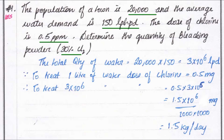For the solution, first we have to find out the total quantity of water required to treat. The total quantity of water equals population multiplied by per capita demand, so 20,000 into 150. We get the value of 3×10⁶ lpd. Now, to treat 1 liter of water, the chlorine dosage required is 0.5 milligrams.